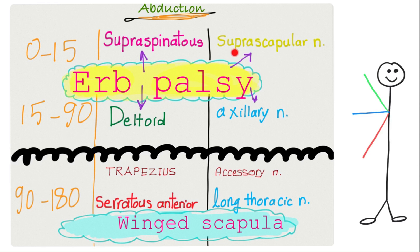Supraspinatus is supplied by a nerve called the suprascapular nerve. Second, to abduct your arm from 15 to 90 degrees, from here to here, you need your deltoid muscle, supplied by the axillary nerve. Then, to abduct your arm past 90 degrees, from here all the way up here, you need two muscles: trapezius and serratus anterior. Trapezius is supplied by the accessory nerve; serratus anterior by the long thoracic nerve.